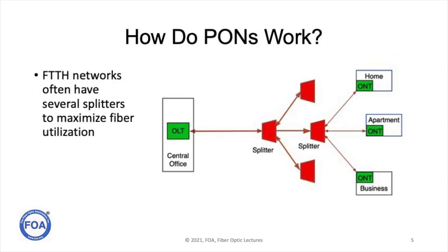PONs scale very well to large numbers of users. Typically, a system today connects 32 users on a single fiber, and they can be over a large geographic area — the length can be 20 kilometers long. To use the minimum amount of fiber and cover the geographic area of the users, it's typical that splitters can be cascaded.